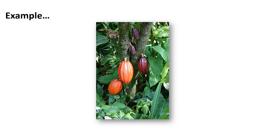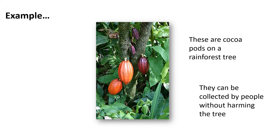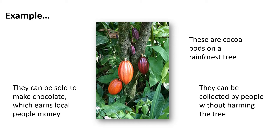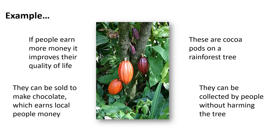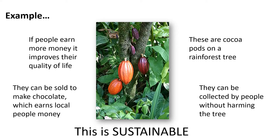One way we can use forests sustainably: we might collect cocoa pods found on trees. These can be collected by local people who get payment and earn money by doing so. Taking pods off the tree doesn't harm the tree at all — they'll grow back the next year. Those cocoa pods can be sold to make chocolate, earning local people money and improving their quality of life, with no harm at all to the forest. If we use forest products without destroying or damaging the trees, it can keep going — that is sustainable.